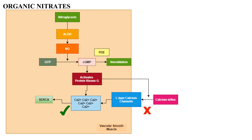Nitroglycerin is metabolized by an enzyme called aldehyde dehydrogenase, which releases nitric oxide. Nitric oxide converts GTP to cyclic GMP, causing predominantly venodilation rather than arterial dilation. Cyclic GMP activates protein kinase G, which causes release of calcium from L-type calcium channels. This calcium enters the myocardial cell or vascular epithelium and leads to vasodilation.